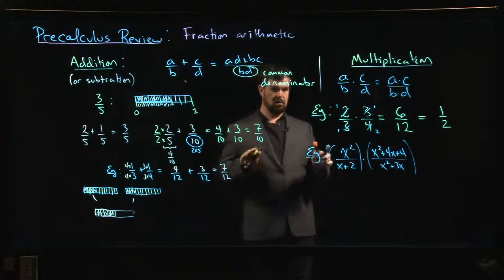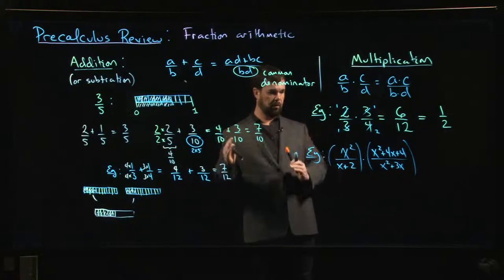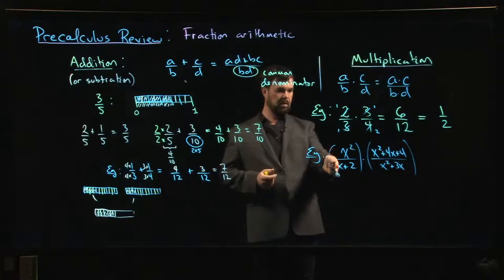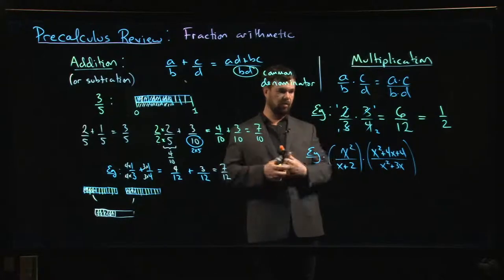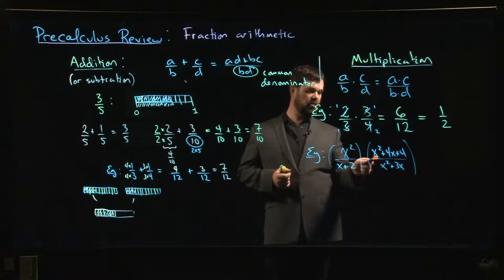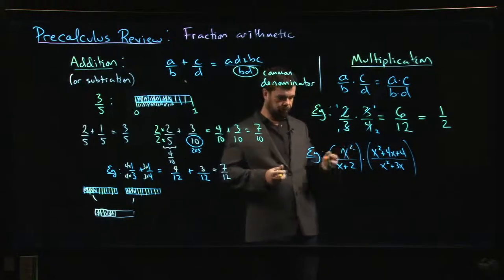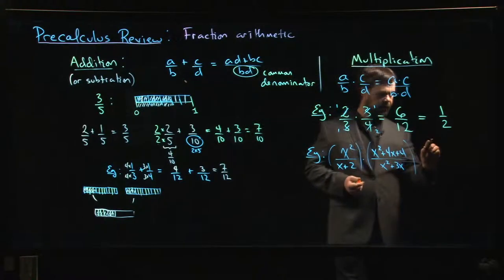With the standard note of caution: you can only cancel things that have been factored out as common multiples. If you have the same multiple on the top that you do on the bottom, you can cancel them. But factors can be canceled, terms cannot. Just because there's an x squared here and here, I can't cancel them out.